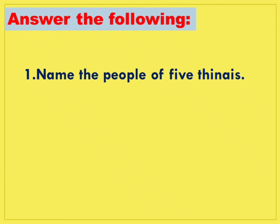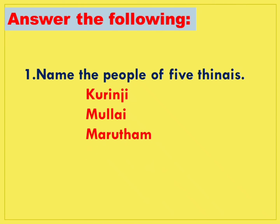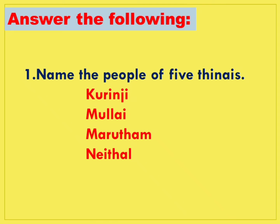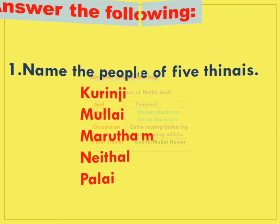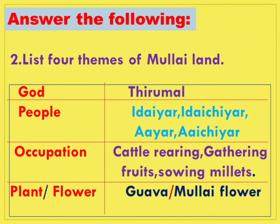Answer the following. First question: name the people of five Thinais — Kurunji, Mullai, Marudam, Naital, and Palai. Second, list four themes of Mullai land. God of Mullai land is Thirumal. People: Edayar, Edaychir, Aayar. Occupation: cattle rearing, gathering fruits, sowing millets. Plant: Mullai flower.